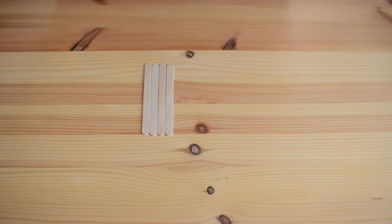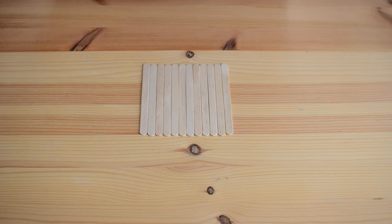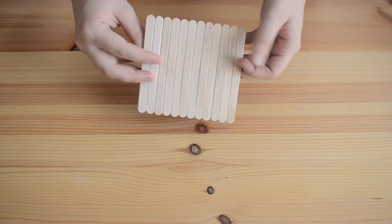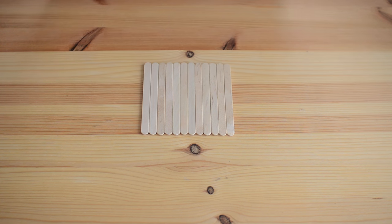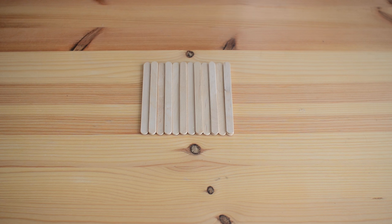To start, take 12 lolly sticks and line them up in a neat row. Then take two more lolly sticks and glue them down to the back to keep everything together. Flip this panel over and on every other lolly stick you're going to glue a second lolly stick. These are going to be the grips for your hamsters feet so they're actually able to turn the wheel around.